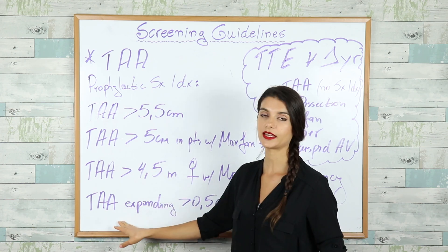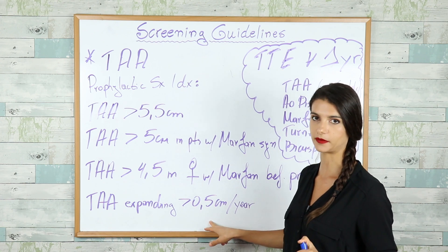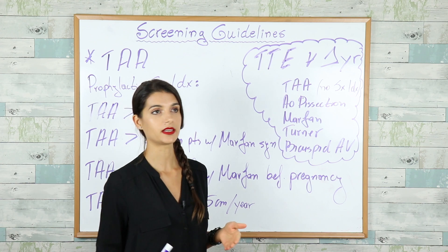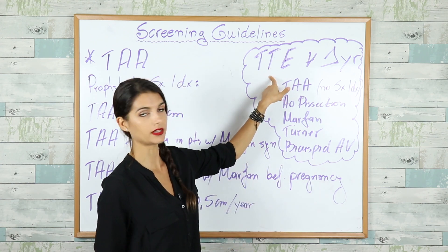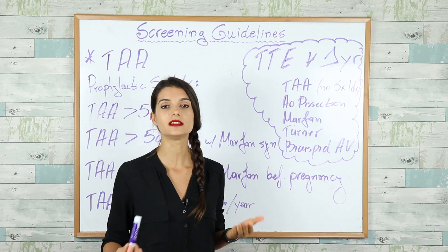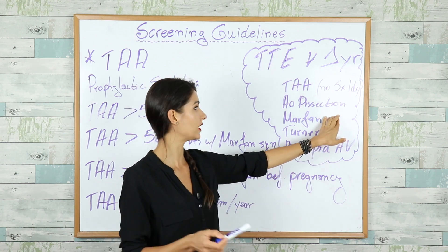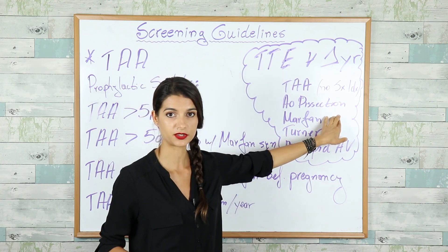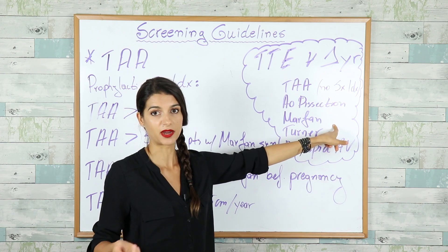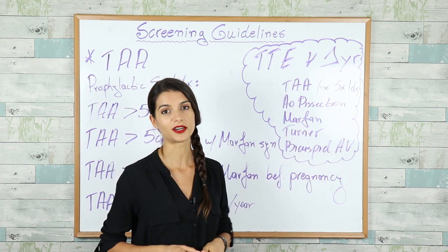And if the TAA is expanding with more than 0.5 cm per year. We screen with transthoracic echo (TTE) every year for everyone else who doesn't need immediate surgery, or the patient has Aortic Dissection on top of Aortic Aneurysm, or the patient has Marfan syndrome, Turner syndrome, or Bicuspid Aortic Valve.